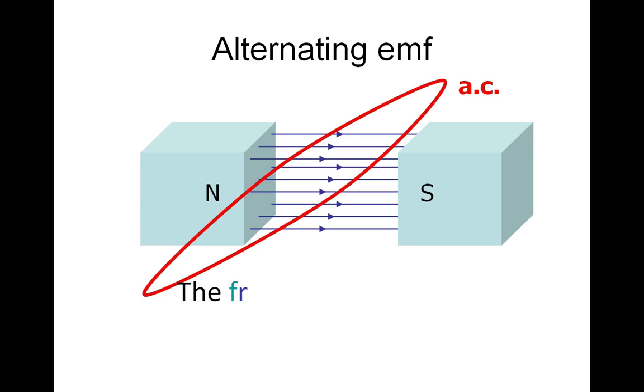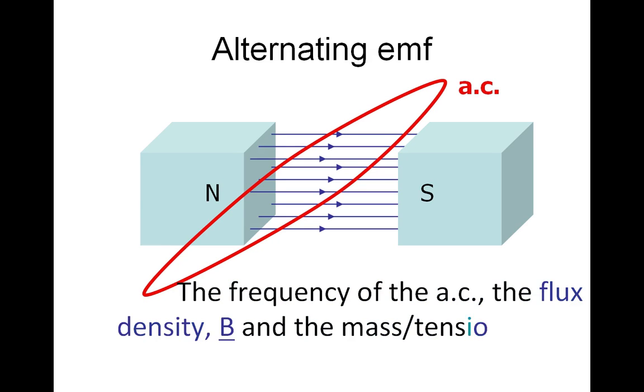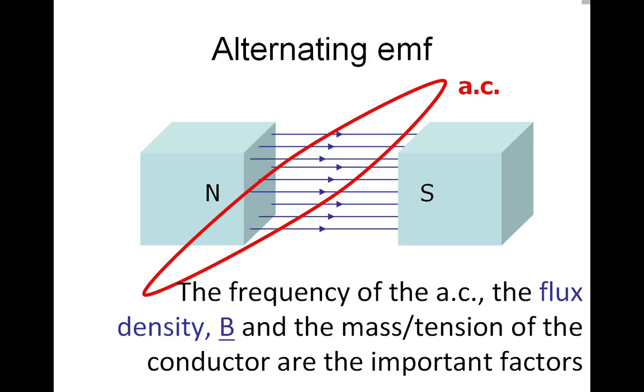The factors that affect that are the frequency, strength of the field, the flux density, and the mass per unit length of the conductor. Also possibly the tension, the weight that we have hanging on the conductor.